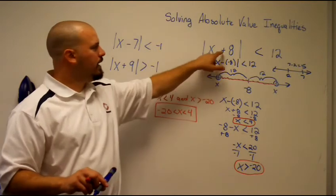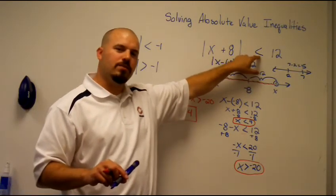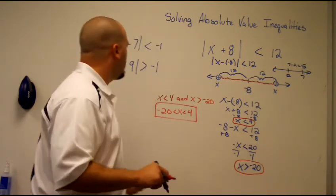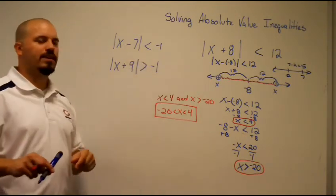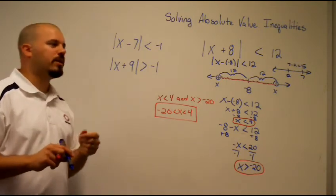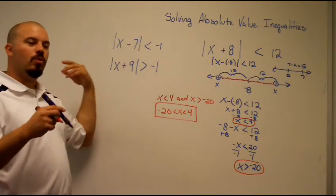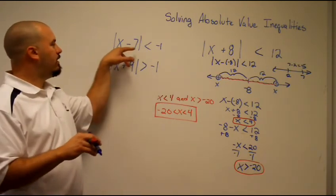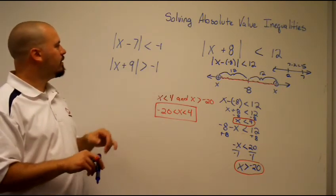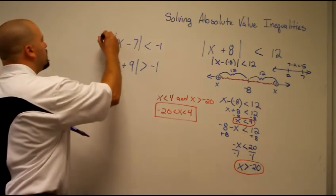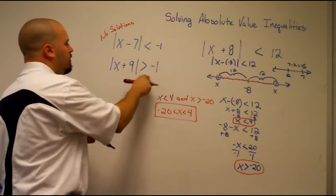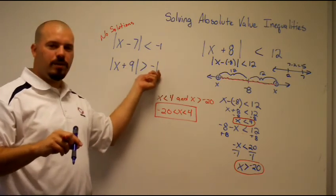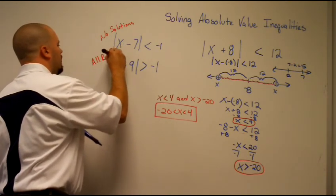That was a different situation where the key difference was the plus sign that we had to rewrite as subtraction. Now let's look at two special cases. For the absolute value of x minus 7 is less than negative 1: since absolute value is always non-negative, it can never be smaller than negative 1, so there are no solutions. For the case where the absolute value is greater than a negative number: since absolute value is always positive, it's always bigger than a negative, so the answer is all real numbers.